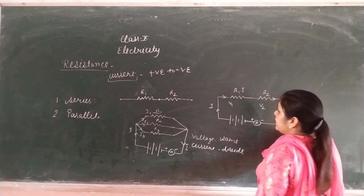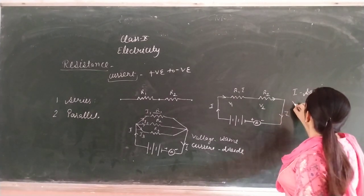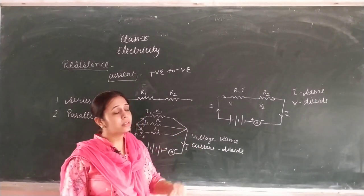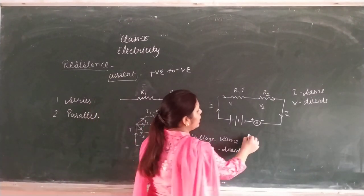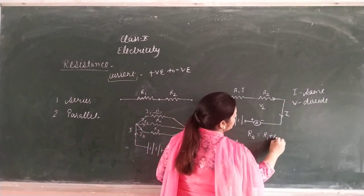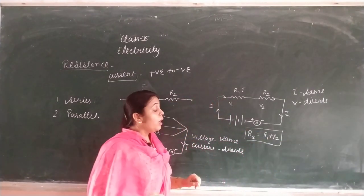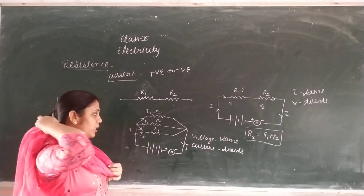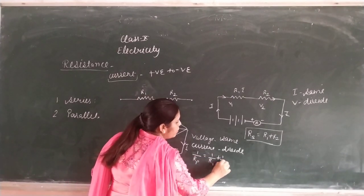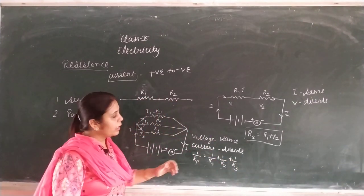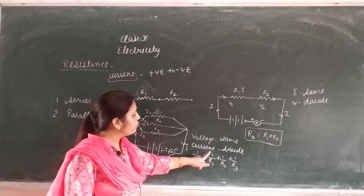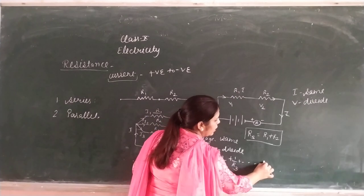So in parallel combination: voltage is same, current is divided. In series combination: current is the same, voltage is divided. If a numerical comes asking you to find total resistance, in series combination total resistance RS equals R1 plus R2. That gives you total resistance. In parallel combination, 1 upon RP equals 1 by R1 plus 1 by R2 plus 1 by R3. If there are N resistances, you can go up to 1 upon RN.